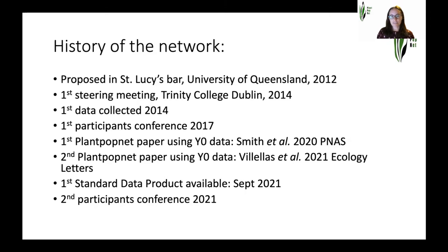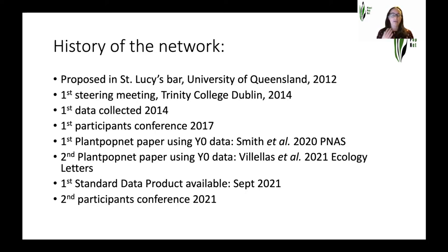The first PlantPopNet data using Year Zero data — demographic data from the whole network — was the Smith et al. 2020 PNAS paper on genetic diversity and demography. The second PlantPopNet paper using Year Zero data was the Villela et al. paper in 2021 published in Ecology Letters, using Year Zero demographic data together with glasshouse and field data on traits as well as demography. Now the first standard data product is available now for participants to take a look at in our shared data folder, and other standard data products will be added to that folder very shortly.